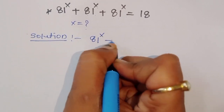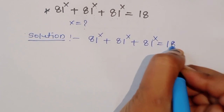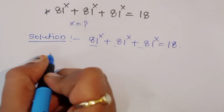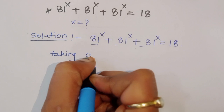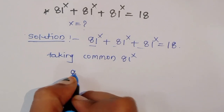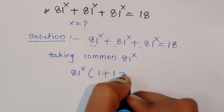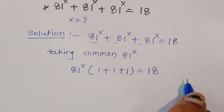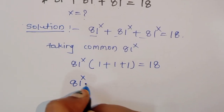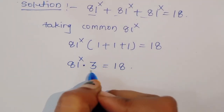81 power x plus 81 power x plus 81 power x is equal to 18. We can take 81 power x common, so we get 81 power x times (1 plus 1 plus 1) is equal to 18. Now we can write this as 81 power x times 3 is equal to 18.